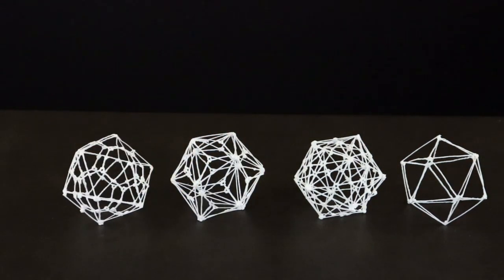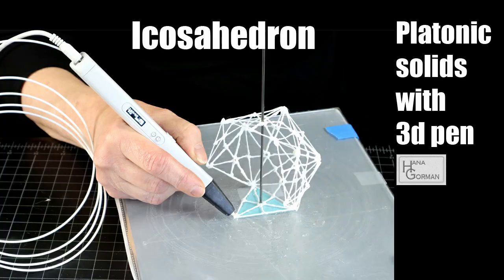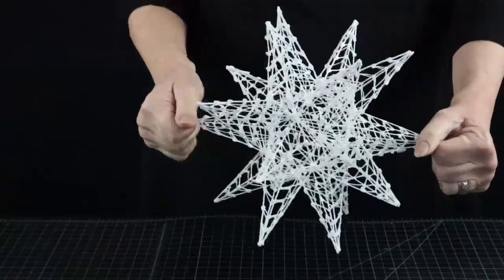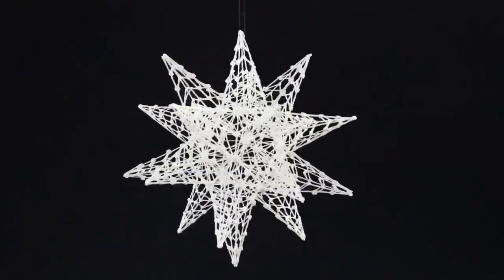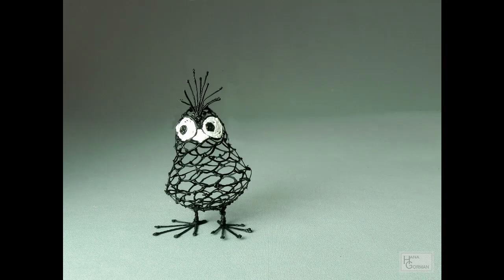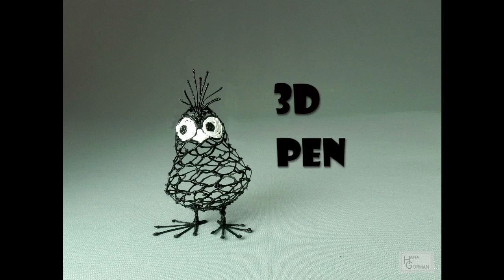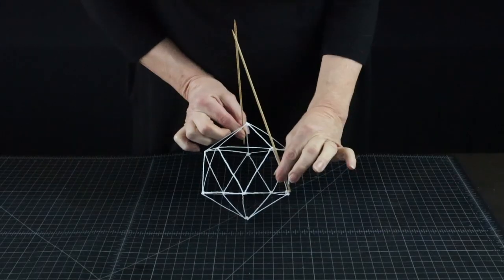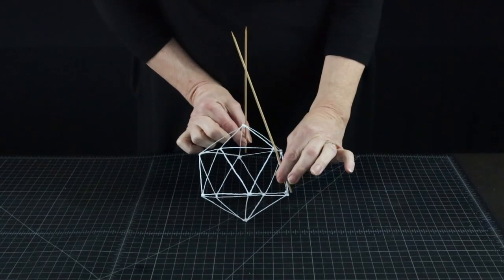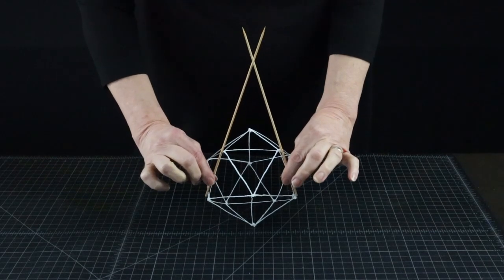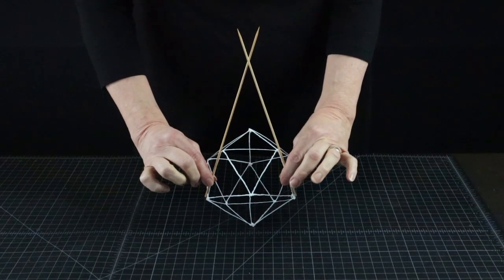If you missed it, the link is in the description. You will need to make one before you can make a star out of it. Because nothing says Christmas quite like a stellated icosahedron. Stellation is a process of extending the existing lines or planes until they cross again and form a star shape.